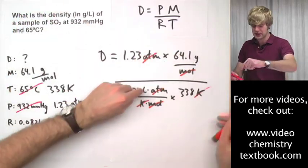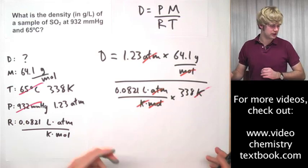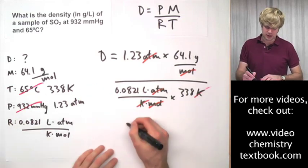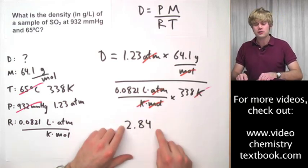So I plug this math into my calculator and the answer that I get out, rounded to three significant figures, is going to be 2.84. What are the units on this?